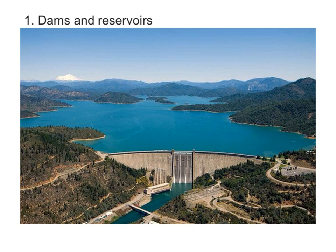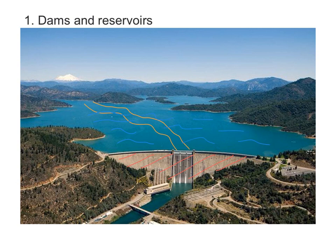The first is dams and reservoirs. A dam is a concrete wall which is built across a river. The river flow is halted, so it's a very effective way of managing floods because it stops the flow of a river. Behind the dam wall, a man-made lake or a reservoir develops, and these have benefits such as recreational purposes.